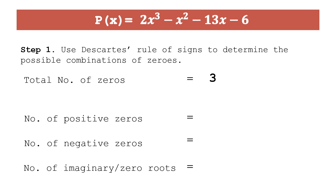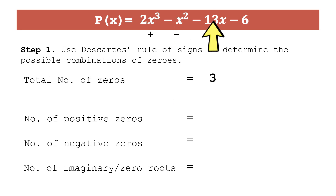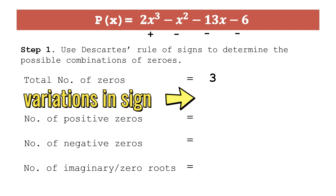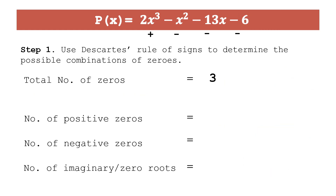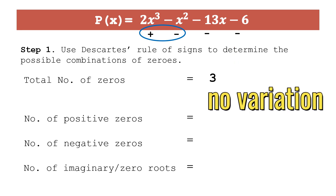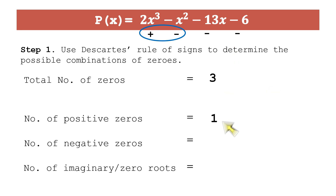To identify the number of positive zeros, we count the sign variations in p(x). The terms are: 2x³ (positive), −x² (negative), −13x (negative), and −6 (negative). A variation occurs when successive terms have opposite signs. We have positive then negative — that's one variation. The remaining consecutive negatives show no further variations. Therefore, there is one positive zero.